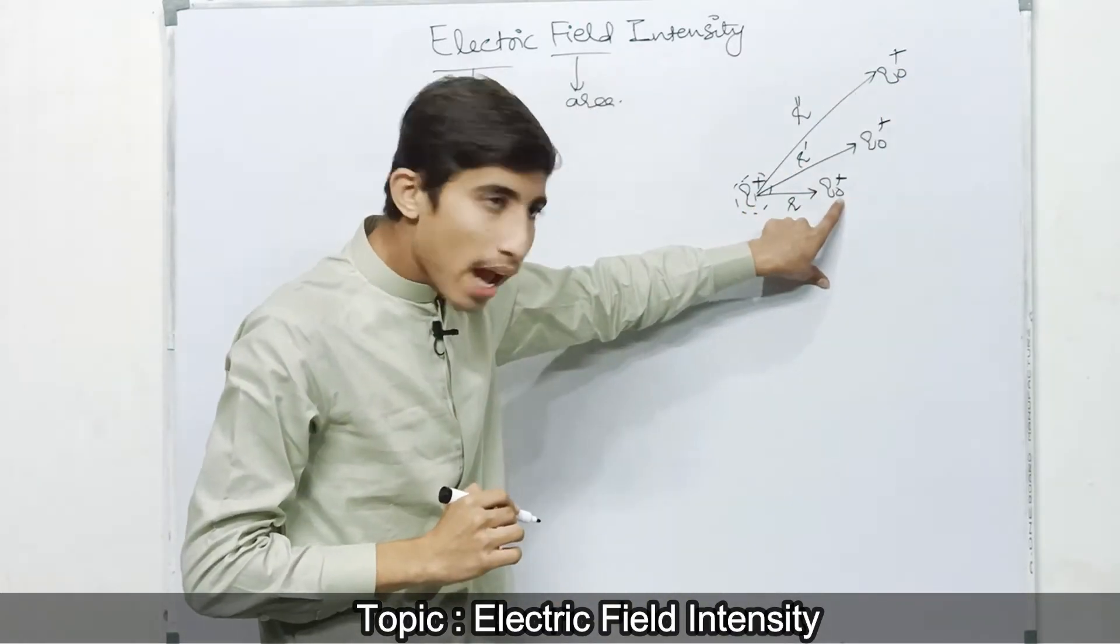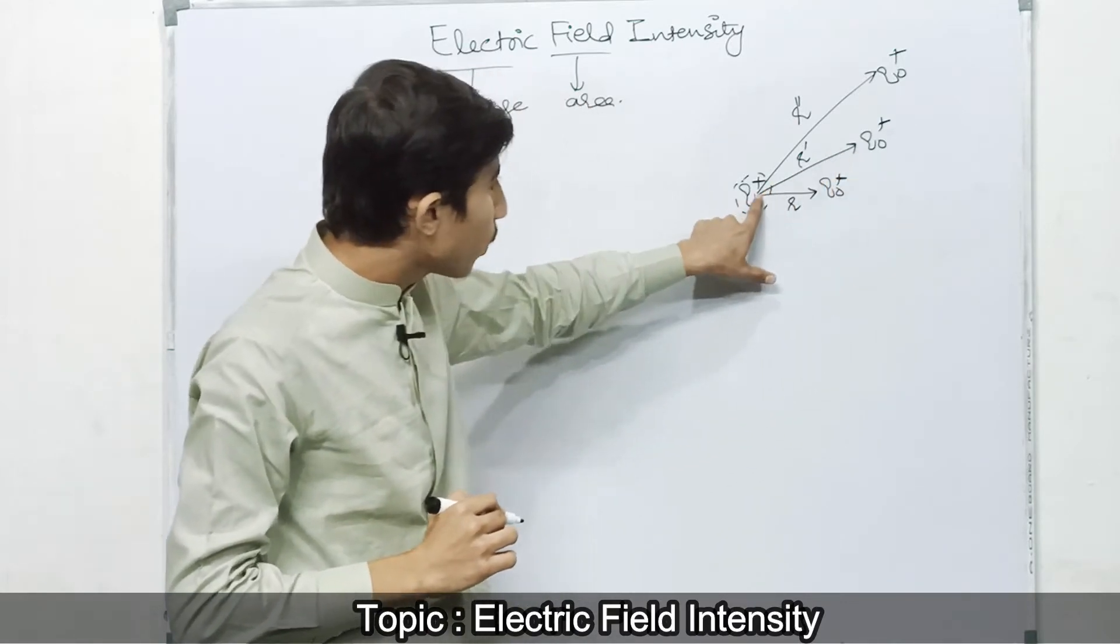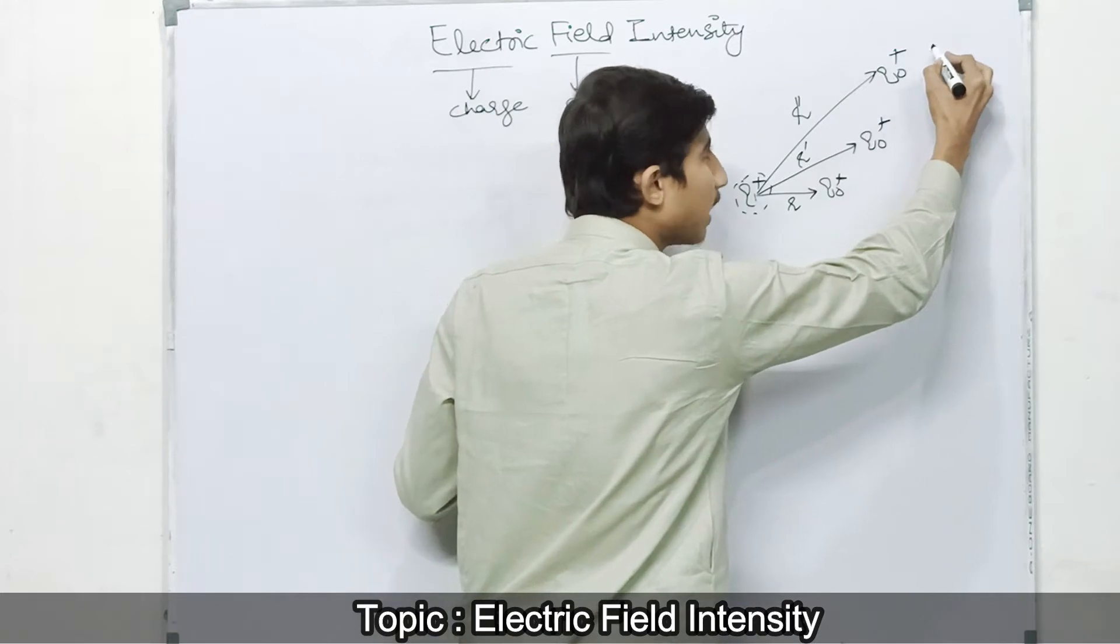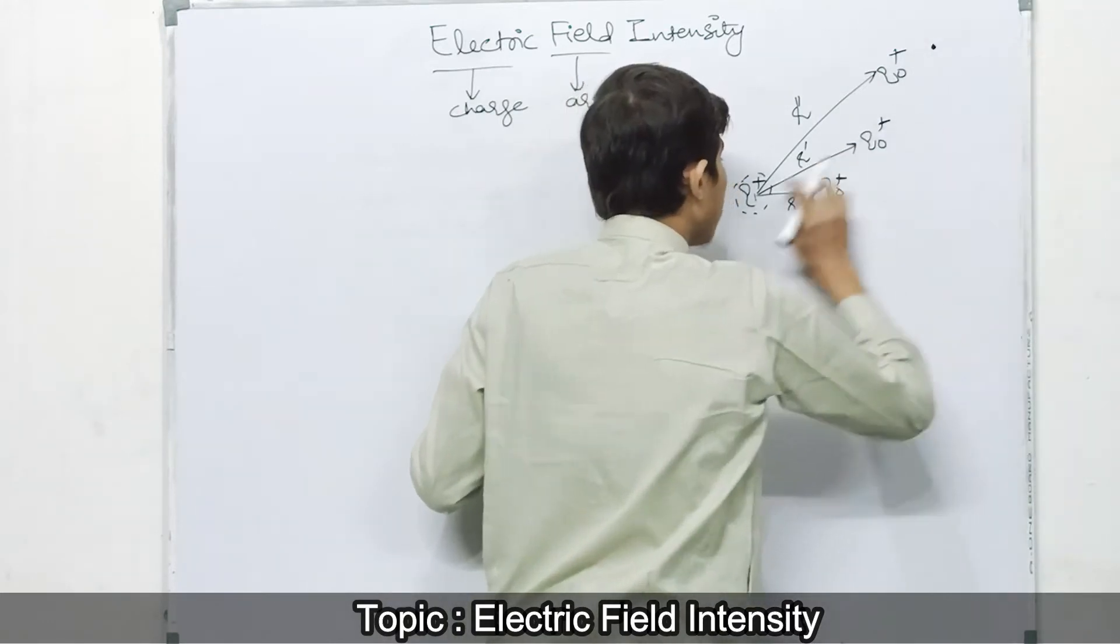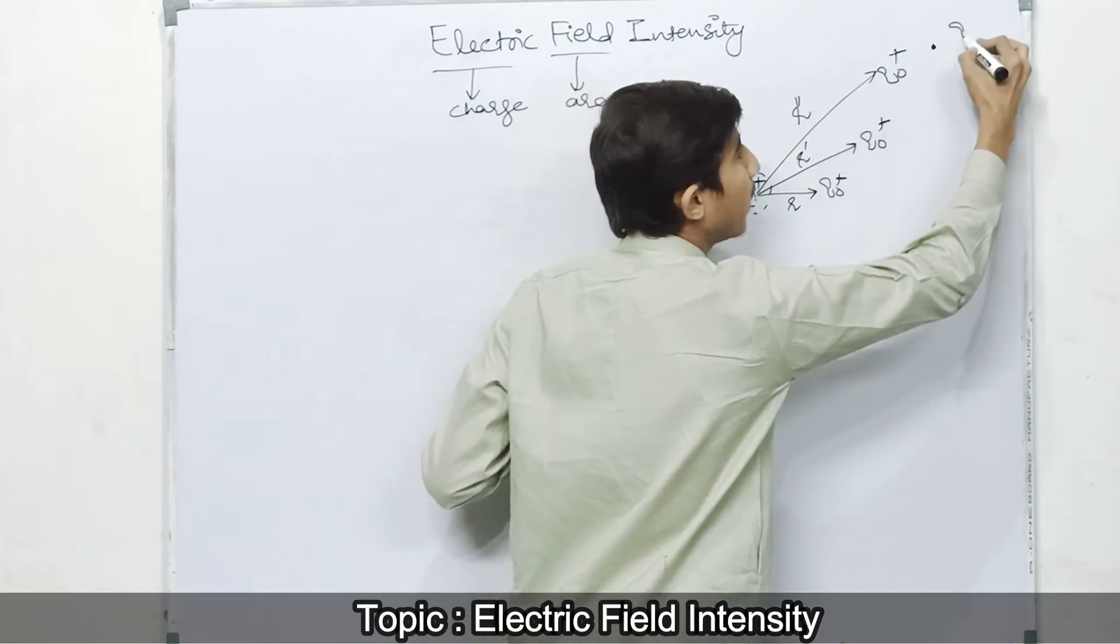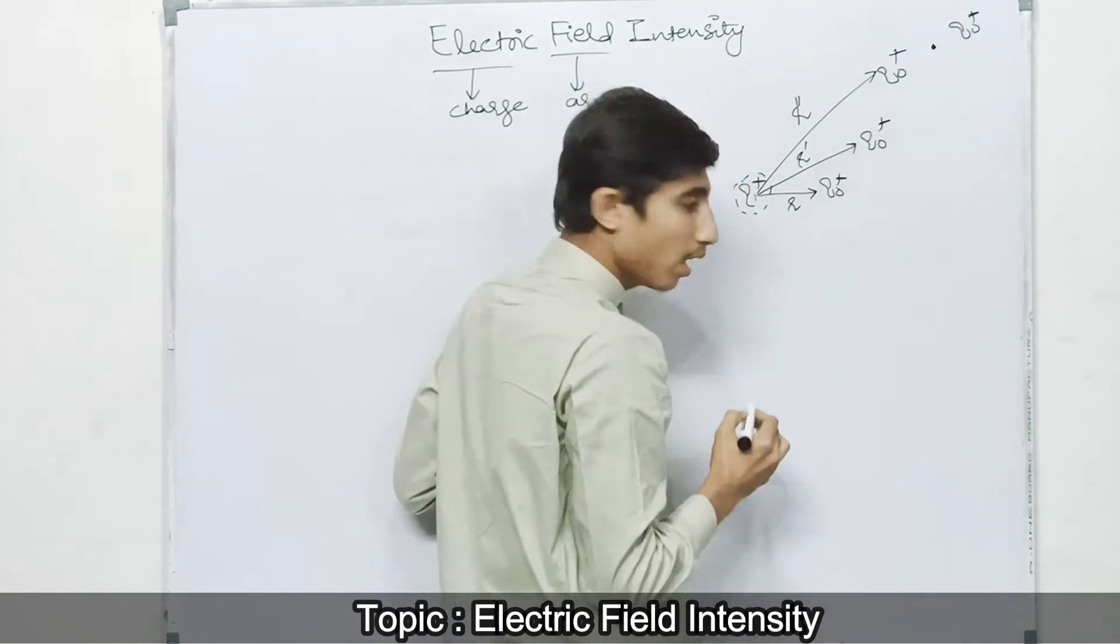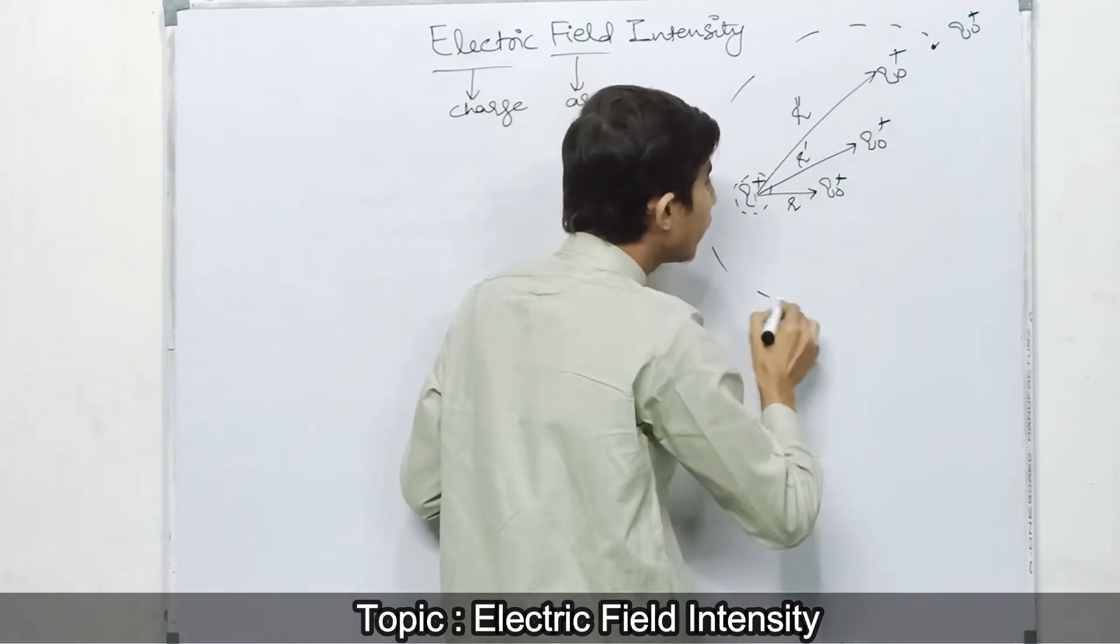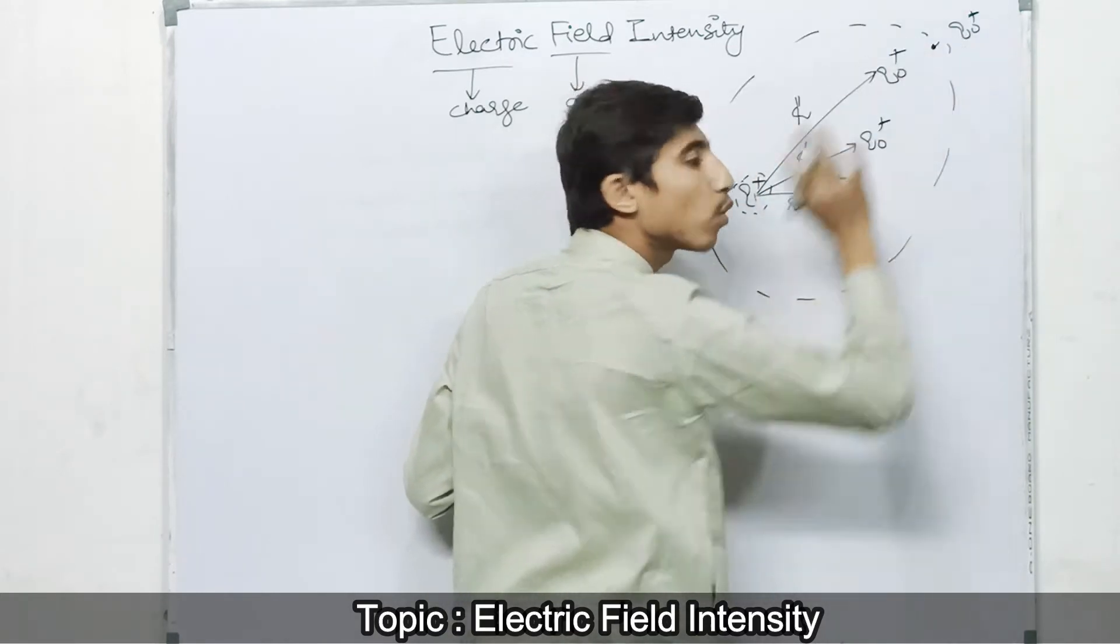This charge will exert force on another charge. But there is a certain point beyond which this charge cannot exert force on the other charge. For example, if we bring this charge here, there is a point beyond which this charge will not exert force.